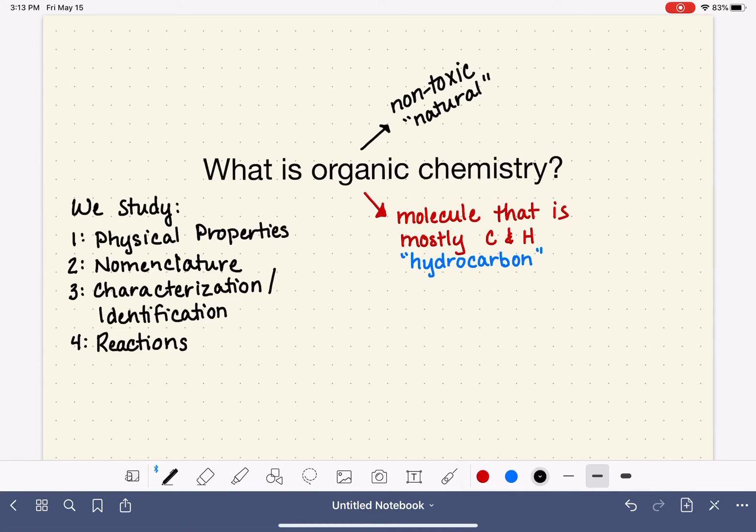This reaction, studying reactions, this is something that we spend some time on in general chemistry, but not in the same level. In general chemistry, we really focus on balancing equations, predicting the products of some reactions, like precipitation reactions or acid-base reactions. But that's very different from the depth that we go into in organic chemistry.